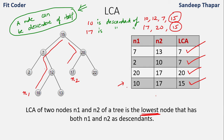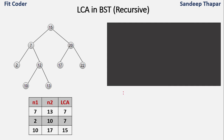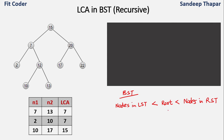Given any two nodes in a binary search tree, we have to find the LCA. This can be done both recursively and iteratively. Let's first see the recursive method.